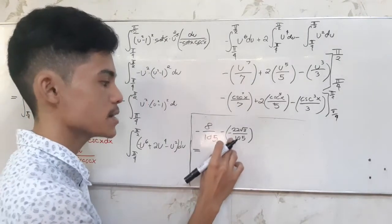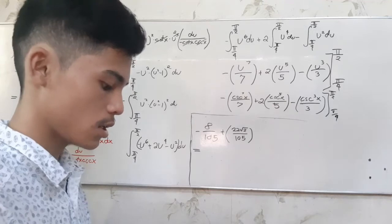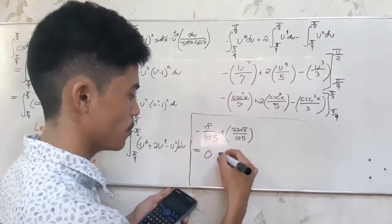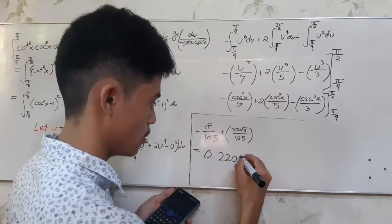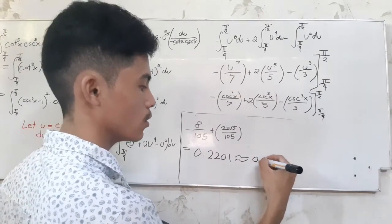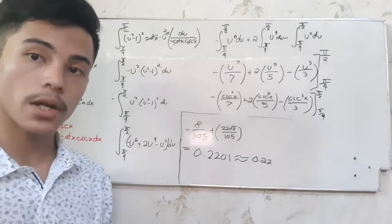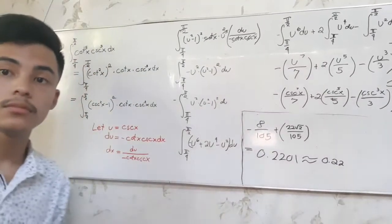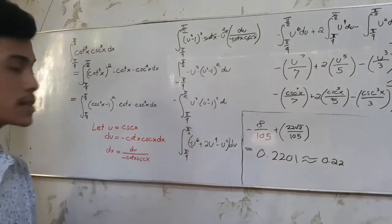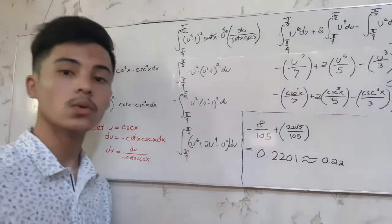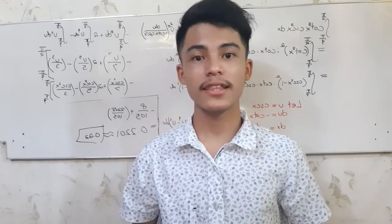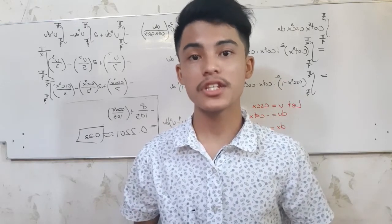This will become positive. Using our calculator, subtracting f of a from f of b: negative 8 over 105 minus negative 22 square root of 2 over 105, this is equal to approximately 0.2201, or just equal to 0.22. So in summary, the value of the definite integral of cotangent x raised to the fifth power times cosecant x raised to 3 is equal to 0.22. And that's all for the process of u-substitution. Now we'll proceed to the next topic, which is the change of interval.